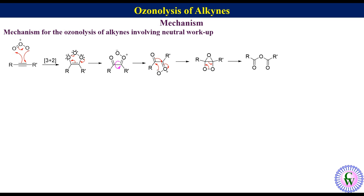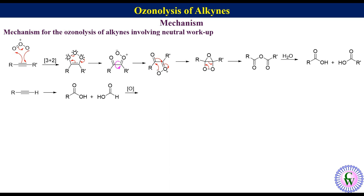Opening up the four-membered ring gives an anhydride. In the presence of water, the anhydride gets hydrolyzed to produce carboxylic acid. If R and R-prime are the same, then only one type of carboxylic acid is formed. If the alkyne is terminal, it leads to the formation of carboxylic acid and formic acid; here formic acid immediately gets oxidized to carbon dioxide.